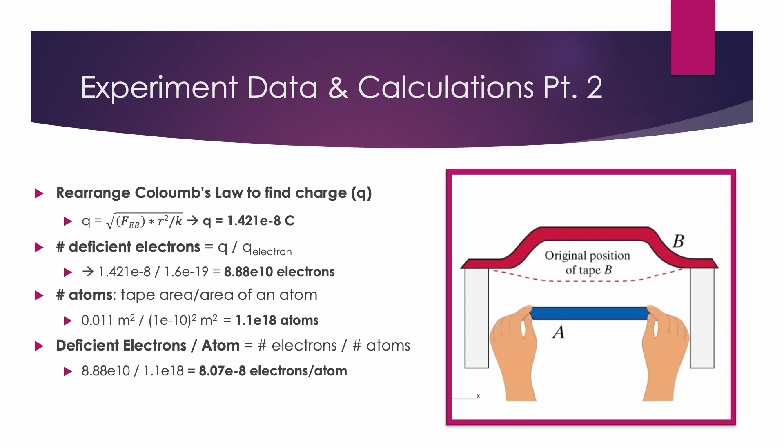We can calculate the number of our deficient electrons by taking that charge and dividing it by the charge of an electron. We can estimate the number of atoms in our tape by taking our tape surface area divided by our estimated area of an atom. And then we can get that ratio of deficient electrons per atom by taking our total deficient electrons and dividing it by our total number of atoms to get 8.07 times 10 to the negative 8 deficient electrons per atom.